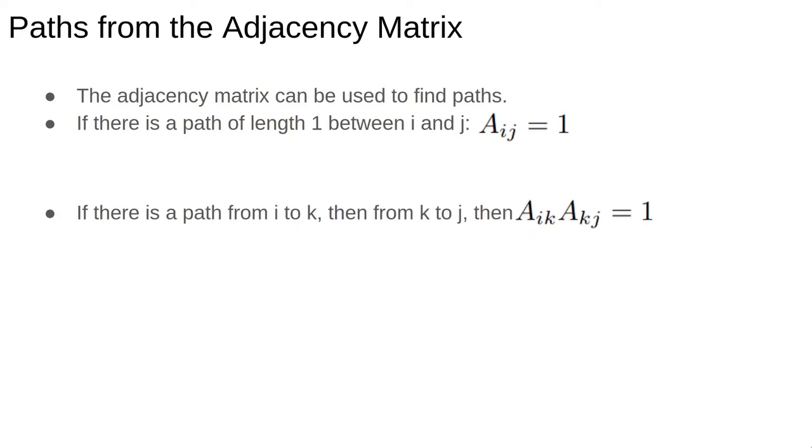If there is a path that goes from i to j via an intermediate node k, then the matrix element A_ik is 1, and the matrix element A_kj is 1, so their product is also 1. If either of the links is missing, one of the terms is 0, so the product is 0. If we sum over all the possible intermediate points in the network, this gives the number of paths of length 2 from node i to node j.